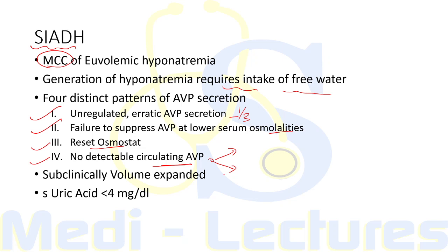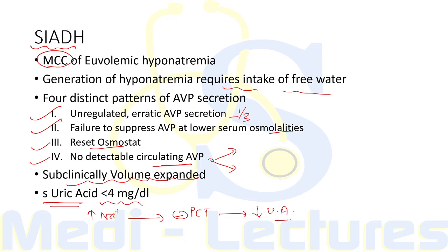In the fourth pattern of SIADH, there is either a gain-of-function mutation in renal water reabsorption — where water is reabsorbed without AVP — or some circulating antidiuretic substance distinct from AVP. Strictly speaking, SIADH patients are not euvolemic but sub-clinically volume expanded. Serum uric acid is typically less than 4 mg/dL in SIADH because increased sodium delivery to distal tubules inhibits proximal tubular reabsorption of sodium and uric acid by glomerulotubular feedback. In contrast, hypovolemic hyponatremia shows decreased distal sodium delivery and increased proximal reabsorption of uric acid, giving uric acid levels typically greater than 4 mg/dL.